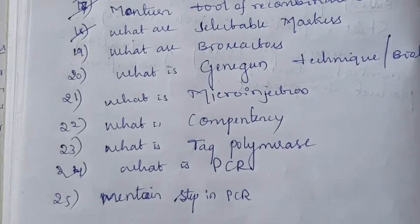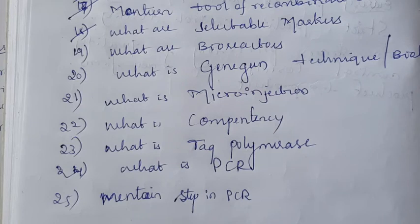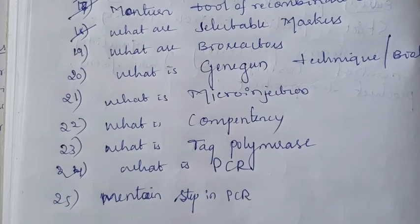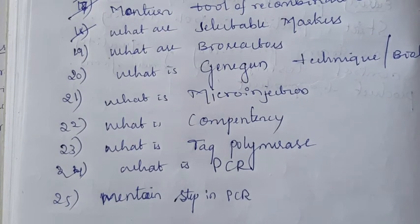The first step in PCR is denaturation. In the denaturation step, there is the separation of double-stranded DNA into single-stranded DNA. The double-stranded DNA is converted to single-stranded DNA in this denaturation step.